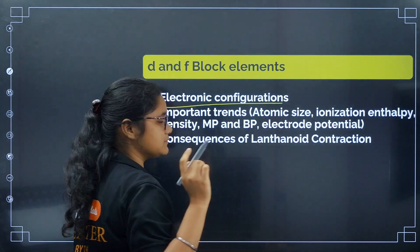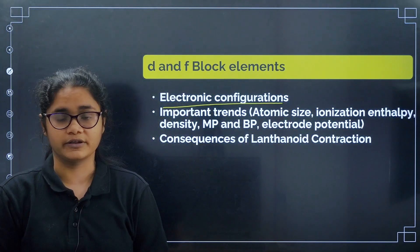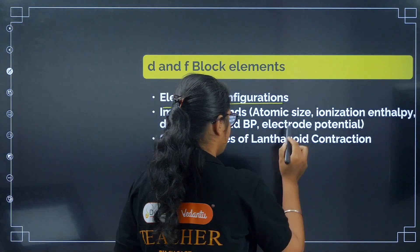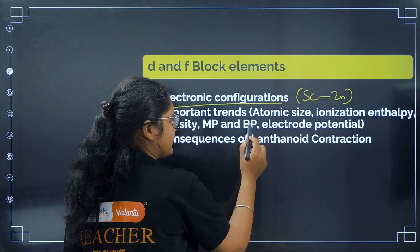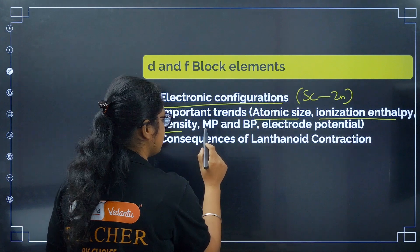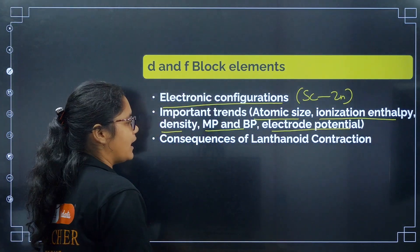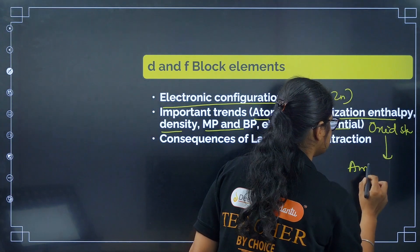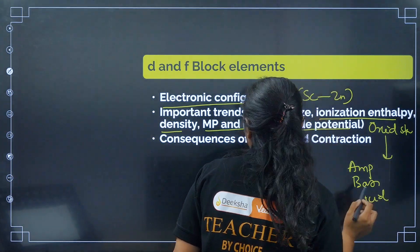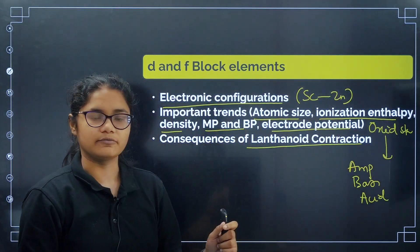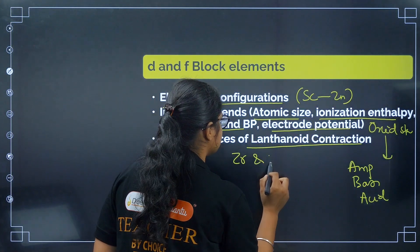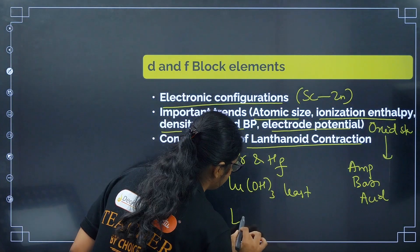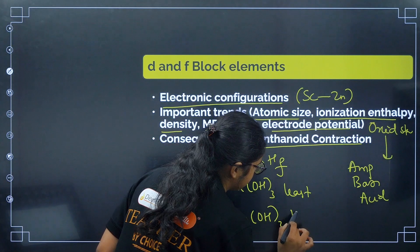In D and F Block, electronic configuration is very very important. Even if you haven't studied anything else, remember the electronic configuration from scandium to zinc, because questions on magnetic properties and color of compounds are based on it. Also cover important trends: atomic size, ionization enthalpy, density, melting and boiling point, electrode potential, oxidation states, amphoteric oxides, basic oxides, and acidic oxides. Know the consequences of lanthanide contraction — most importantly the similar size of zirconium and hafnium, and the basicity order: Lu(OH)₃ is least basic and La(OH)₃ is most basic.